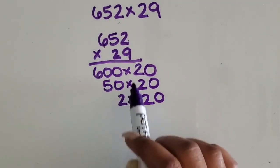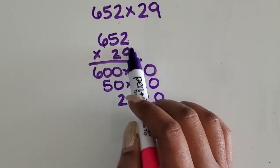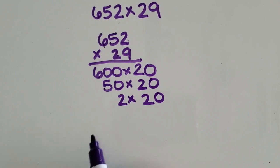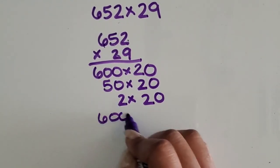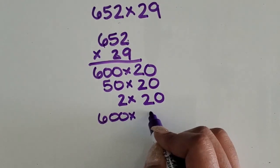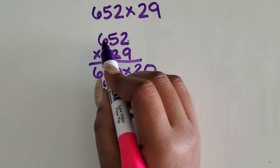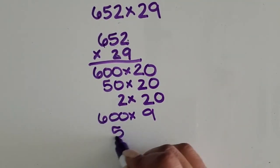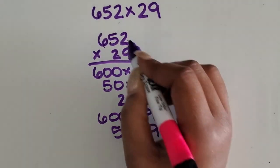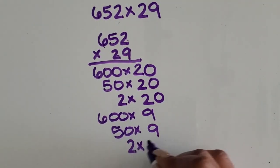Then we're going to repeat these steps with the 9 that's from 29. So again, 600 this time times 9, 50 times 9, and 2 times 9.